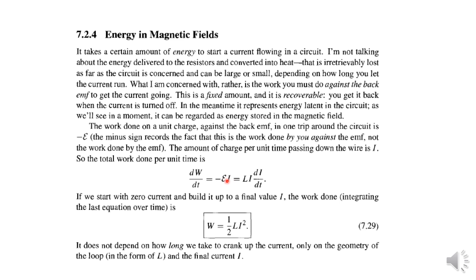The power is V times I, that is minus E times I. Power is work per unit time, that is energy per unit time, that is dW/dt. So dW/dt is equal to minus E times I. And E, the induced EMF from self-inductance by Faraday's law, is minus L dI/dt. Substituting, this becomes L dI/dt — the minus signs cancel.